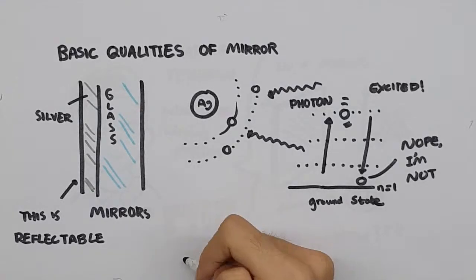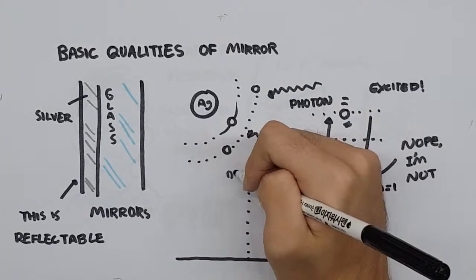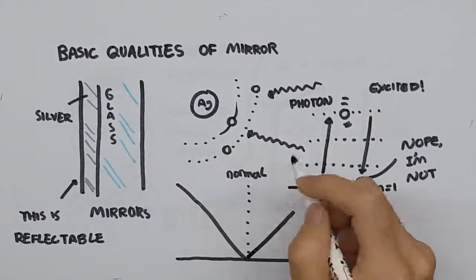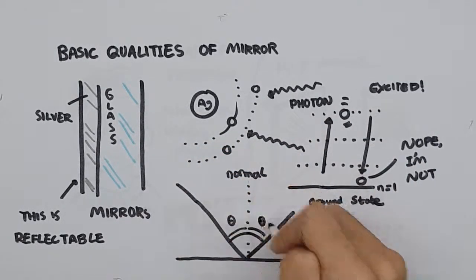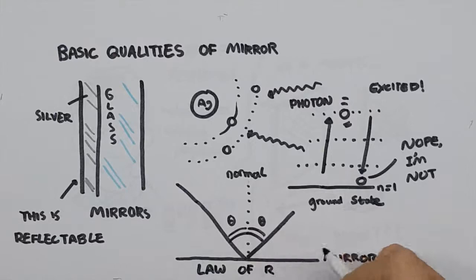Also, this reflected ray of light obeys the law of reflection, which states that the angle at which light hits the surface of a mirror equals the angle of reflection.